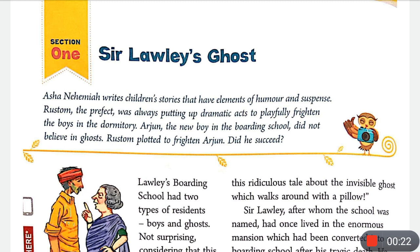Asa Nehemiah writes children's stories that have elements of humor and suspense — fun, mystery, and thriller. Rustam the perfect is our story's first character. Rustam was always putting up dramatic acts to playfully frighten the boys in the dormitory.